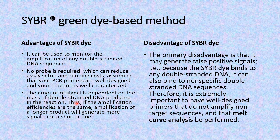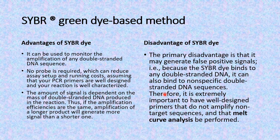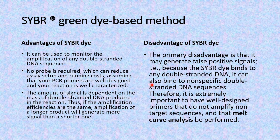Another advantage is that the amount of signal is dependent upon the mass of the double-stranded DNA produced in the reaction. So if the amplification efficiencies are the same, the amplification of a longer product will generate more signal as compared to amplicons produced from a shorter segment of DNA. That means the longer the segment undergoing polymerase chain reaction, the more will be the fluorescence even in fewer cycles, because these dye molecules attach themselves throughout the length of a double-stranded DNA molecule.